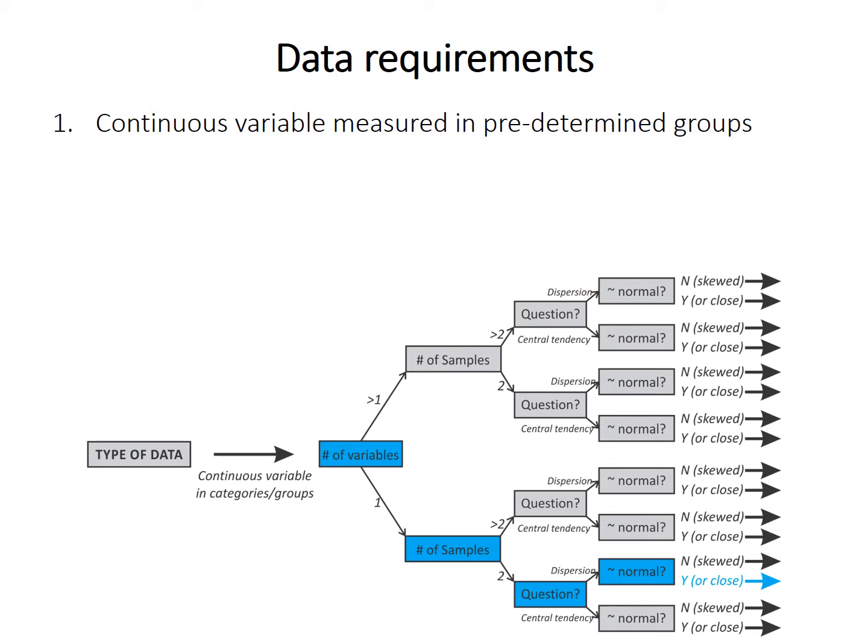These are the requirements or assumptions for performing an F-test. You should think about them as you're deciding if this is the correct test to do for the data you have. Your data must be measured with a continuous variable that's divided into predetermined categories or groups. You must have univariate data, which means comparing only a single variable or single thing that's being measured between the samples.